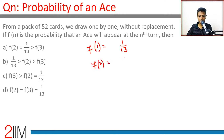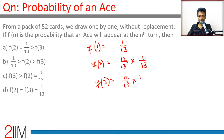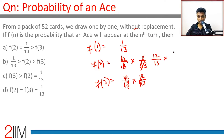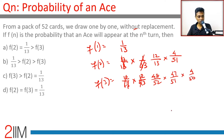f(2): the ace should not have appeared in the first turn, so that is 48 by 52, and then the ace appears in the second turn, which is 4 by 51. f(3) is 48 by 52 into 47 by 51 into 4 by 50, and so on. We need to be careful because this is without replacement.